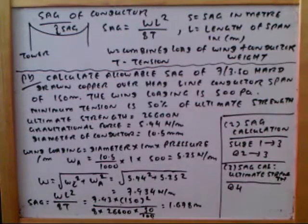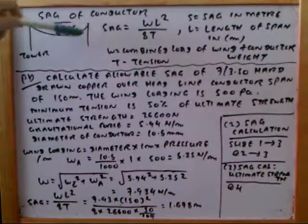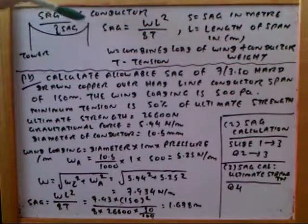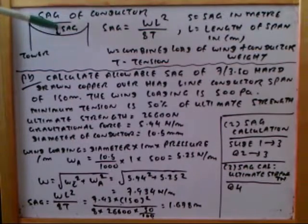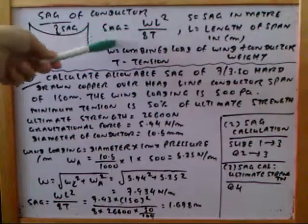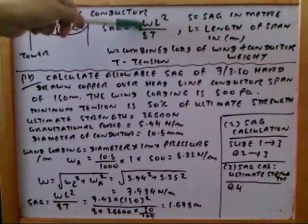This is the setup of the conductor — one of two towers. This is a conductor running between the two towers. This is a horizontal line, and this is the minimum y, the lowest y. The distance between the horizontal line and the lowest y is the sag of the conductor.